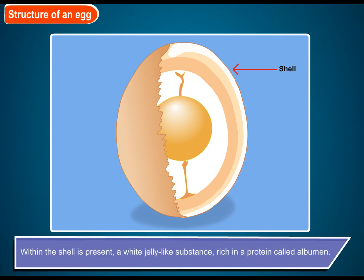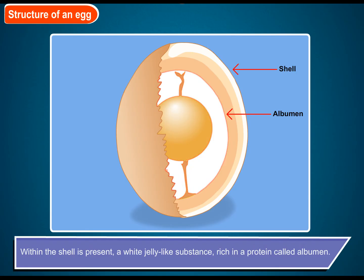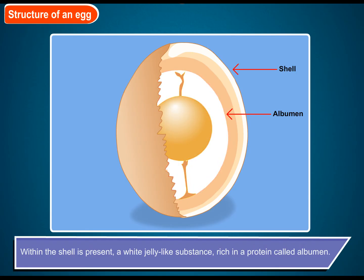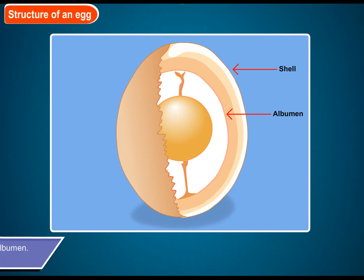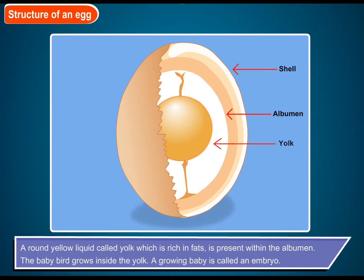Within the shell is a white jelly-like substance rich in protein called albumin. A round yellow liquid called yolk, which is rich in fats, is present within the albumin.